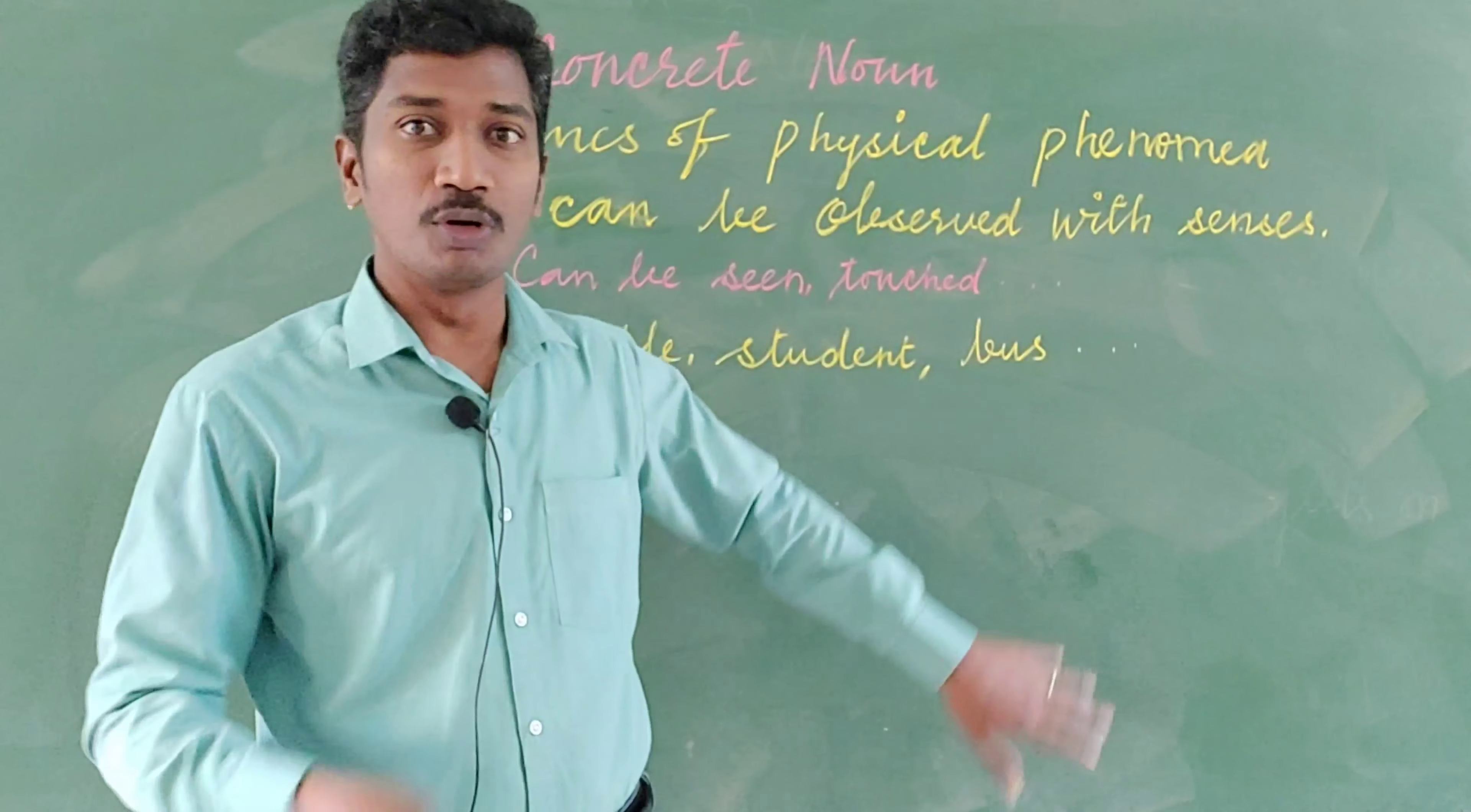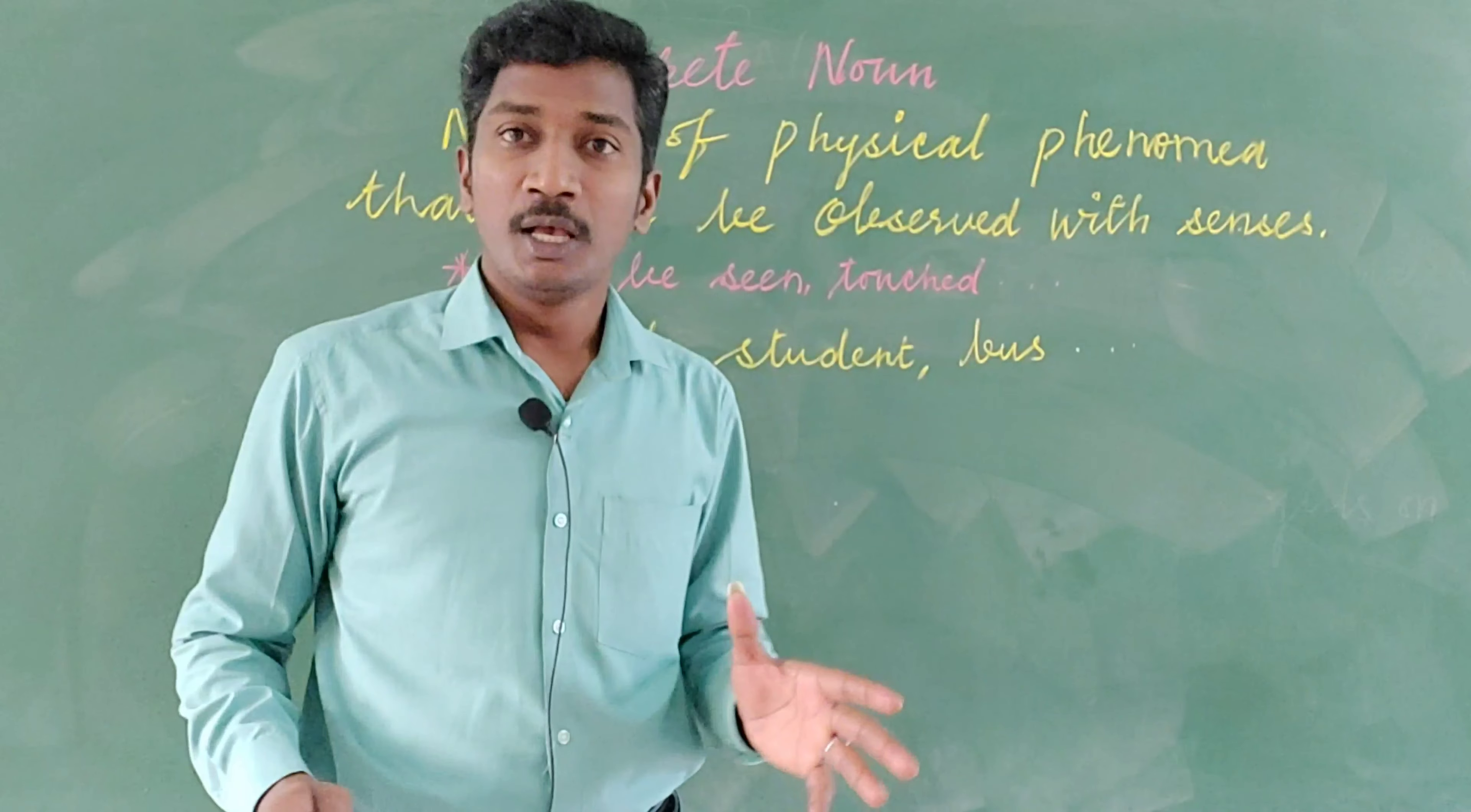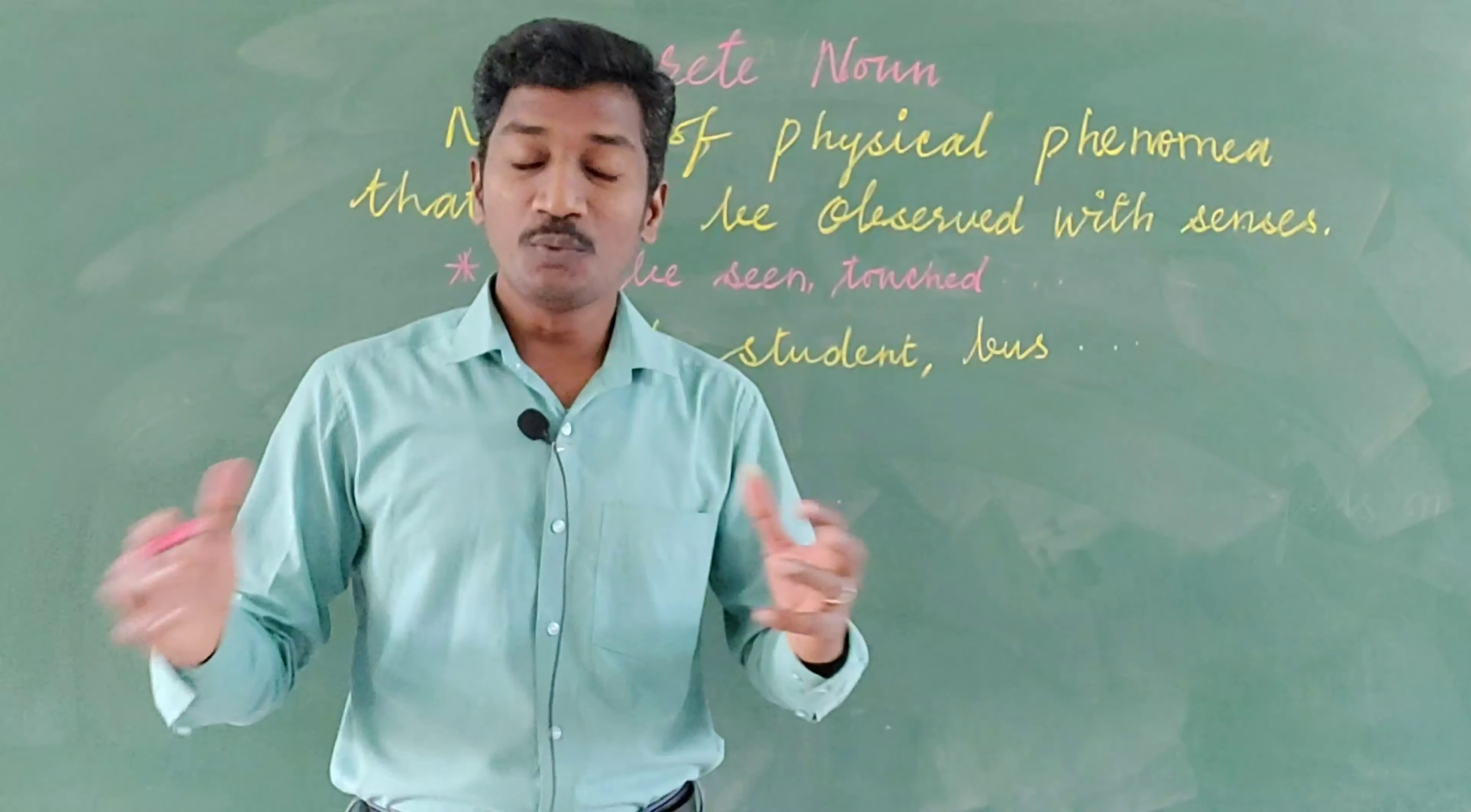They are all called concrete noun. You see, I can touch this board, I can touch this chalk piece, I can touch the mobile or camera, I can touch the fan or walls, bus, car, and everything. These are called concrete. People say don't talk abstract, please speak concrete. Concrete means which is visible, which I can see, which I can see to it.